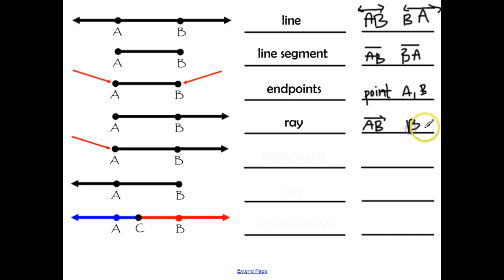Likewise, you can switch the letters, except you want to represent the exact same ray. So it doesn't matter that this ray happens to be pointing to the right. We just want to list that it starts at A and then it goes forever in the direction of B. So your arrow, your symbol on top, has to represent what your diagram is showing.